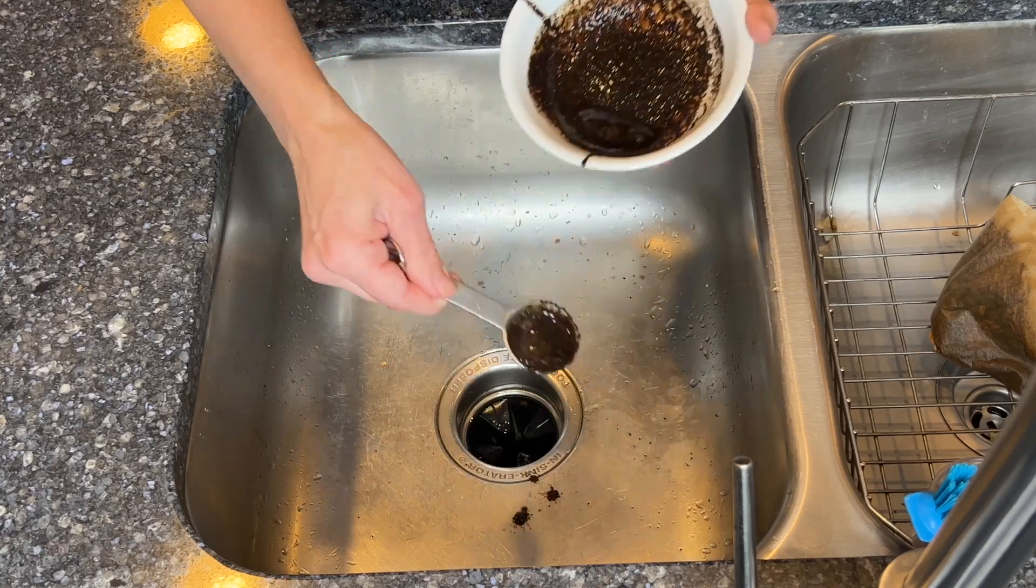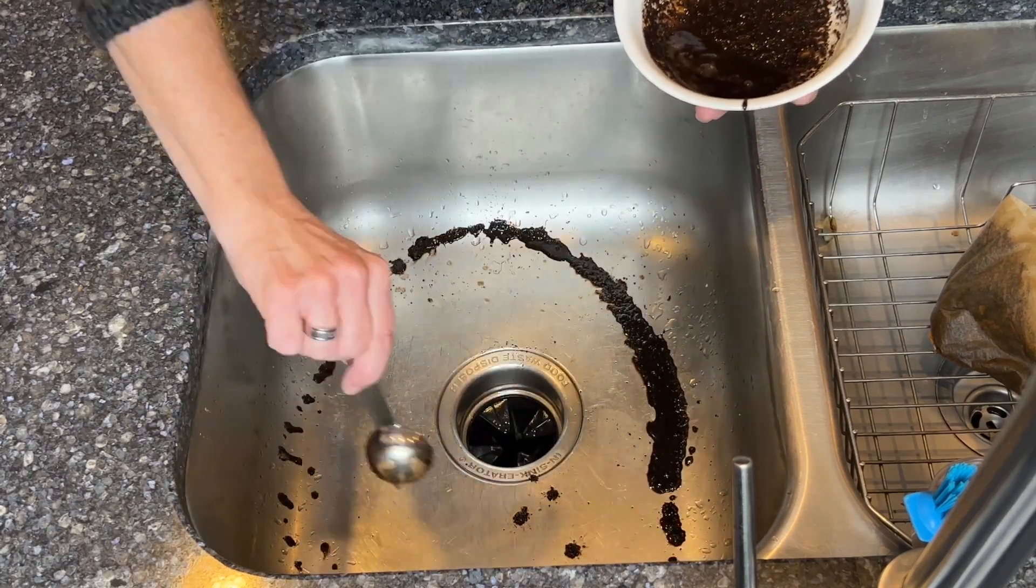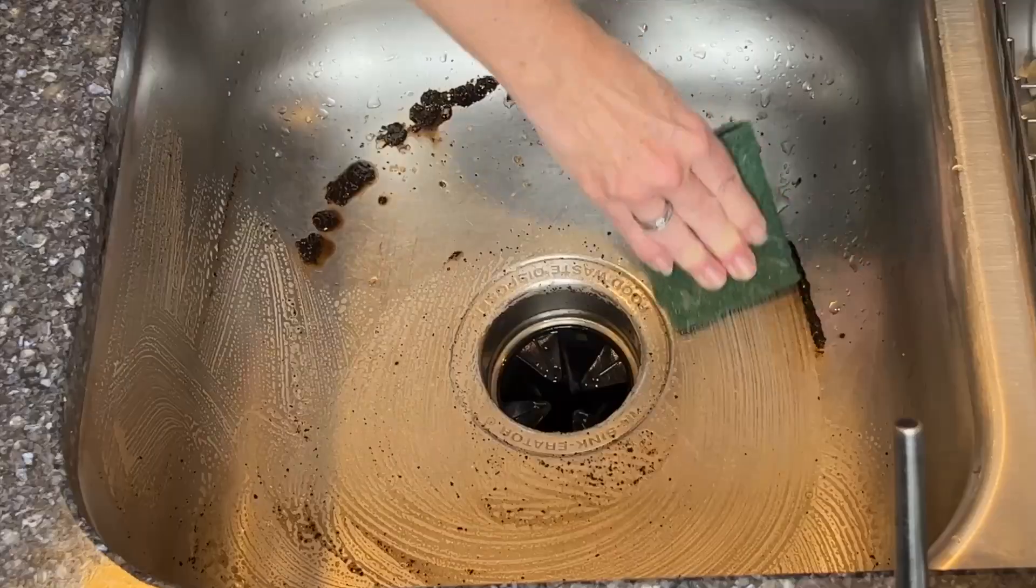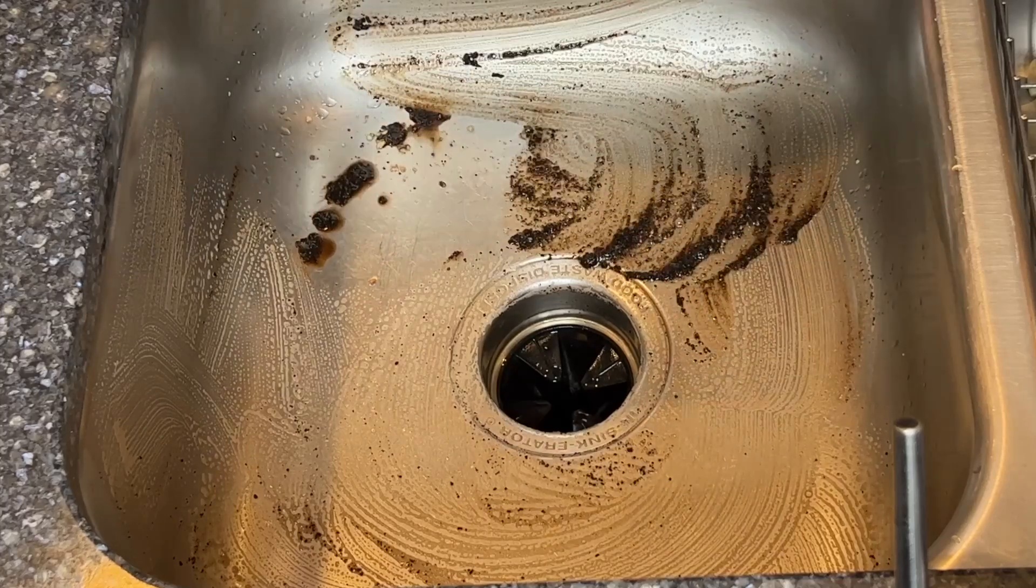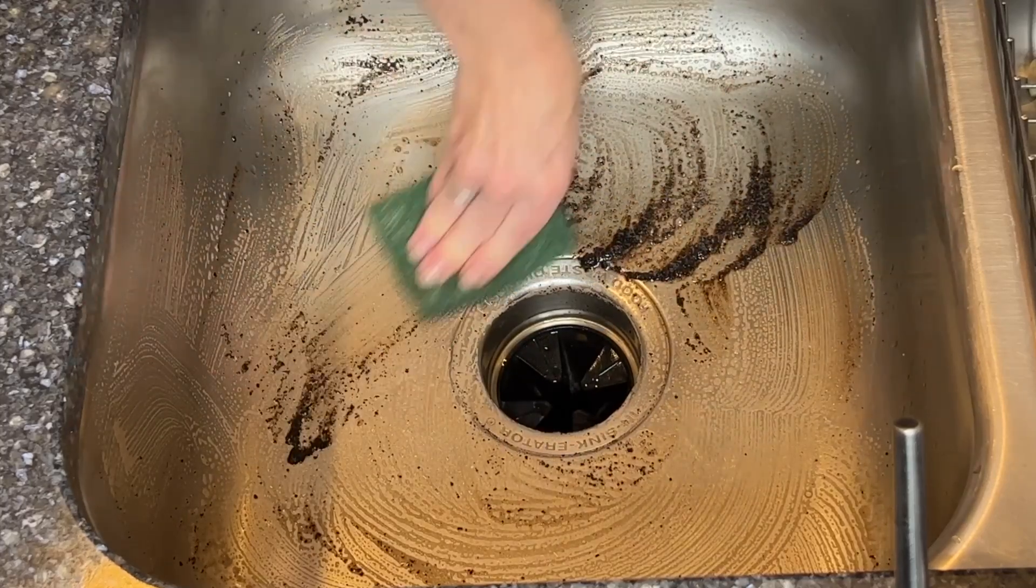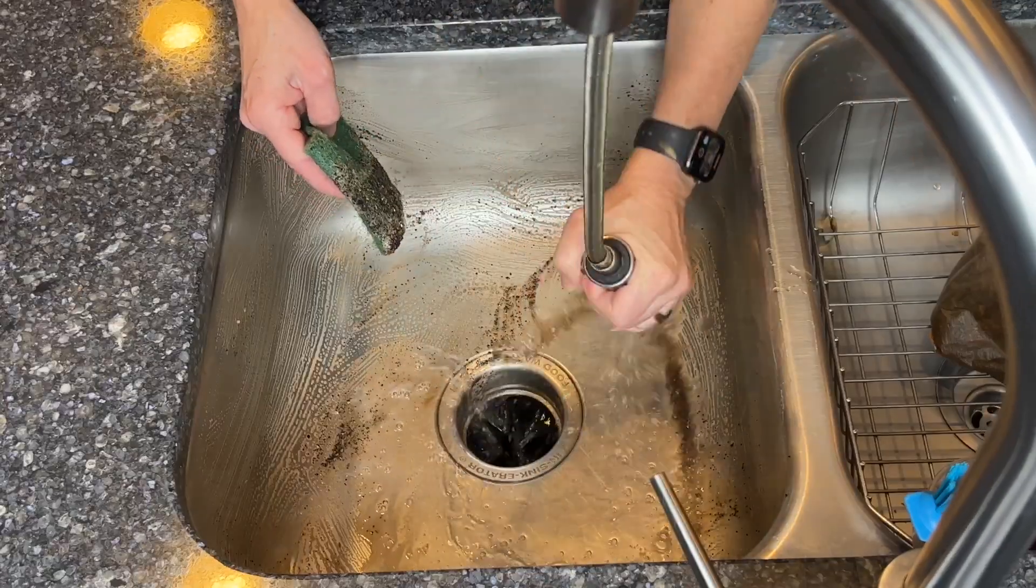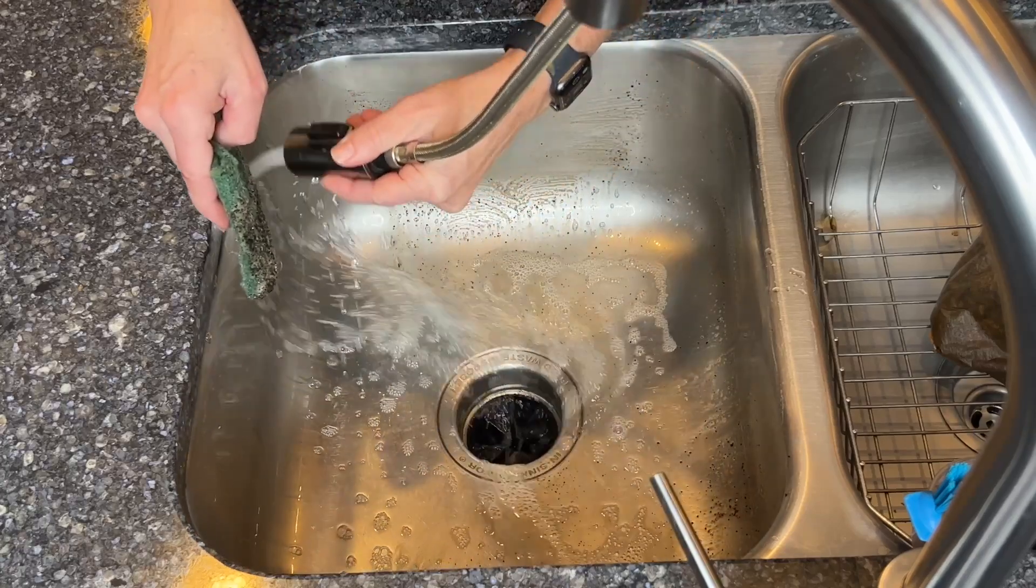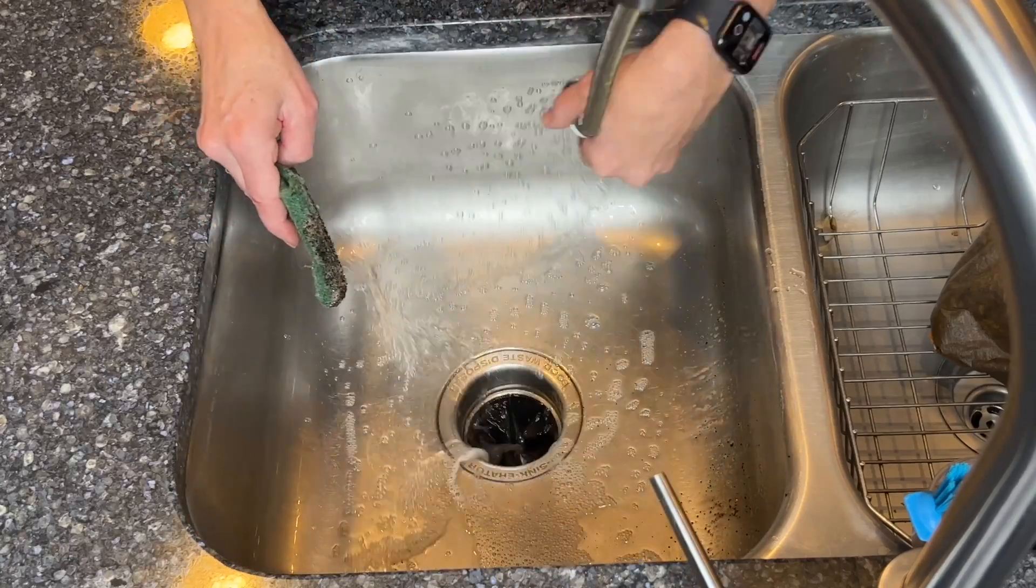Scoop some of the soapy coffee grounds into your sink, grab a scrub pad, and scrub your entire sink. Make sure to hit the drain, edges, and everything else in your sink. The soap will disinfect your sink. The coffee grounds will scrub away anything that's sticking in your sink.